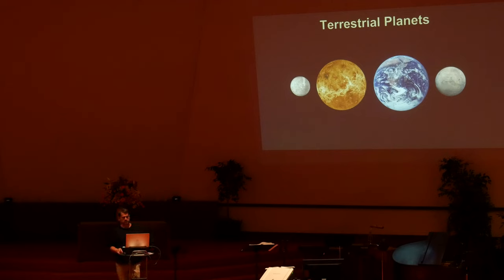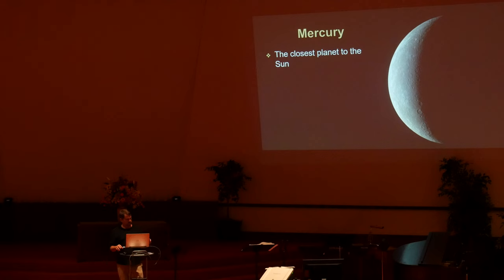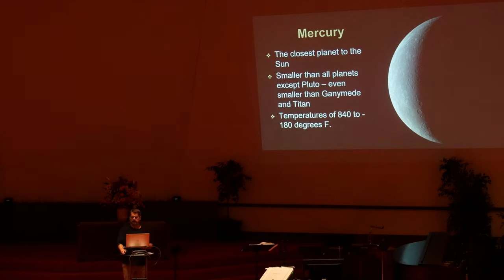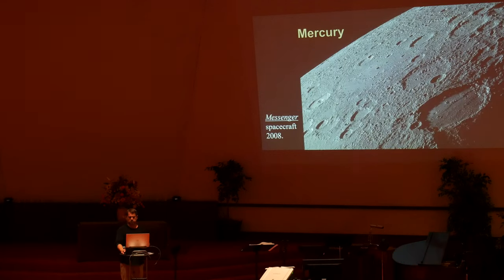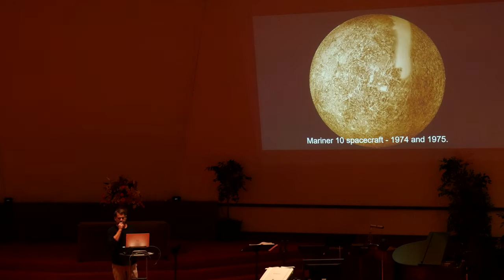We'll be looking at each planet in turn, examining design features and uniqueness that argue for creation and against the nebula hypothesis. First, we'll start with the terrestrial planets — Mercury, Venus, Earth, and Mars. Mercury is the closest planet to the sun. It's smaller than all other planets except Pluto — even smaller than Ganymede and Titan, the moons of Jupiter and Saturn. Temperatures on Mercury range wildly from 840 degrees to negative 180 degrees Fahrenheit. Mercury looks much like our moon with lots of craters. This is a colorized image from the Mariner 10 spacecraft, taken back in 1974 and 1975.